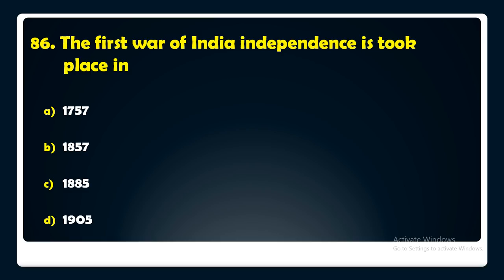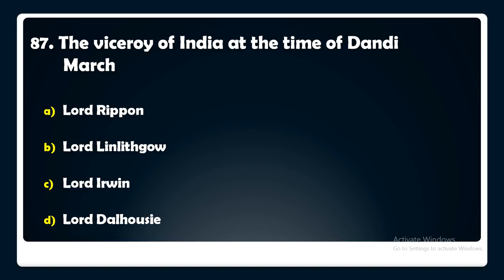The Viceroy of India at the time of the Dandi March was — Lord Ripon, Lord Linlithgow, Lord Irwin, or Lord Dalhousie? The answer is: the Viceroy of India at the time of the Dandi March was Lord Irwin.